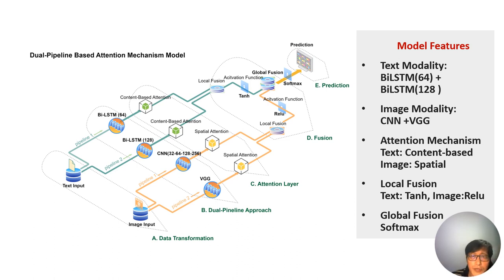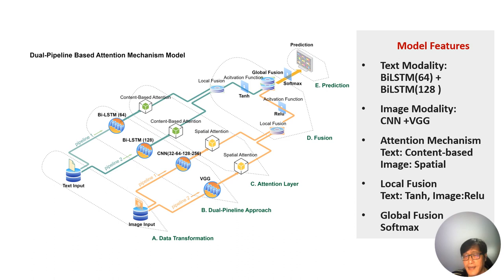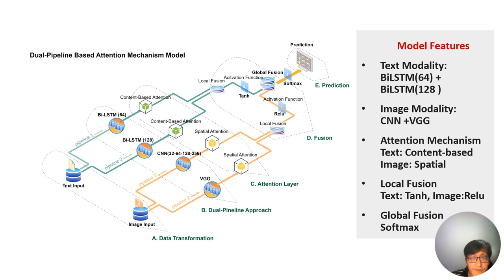This is our proposed model utilizing our innovative framework. In the text modality, BiLSTMs with 64 and 128 units decode language nuances with remarkable precision. Concurrently, in the image modality, advanced CNN and VGG layers collaborate to extract emotional cues from visual data. See how our model enhances focus with content-based and spatial attention mechanisms, leaving no important details overlooked.